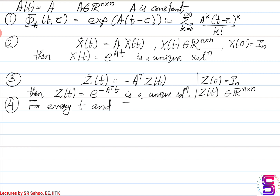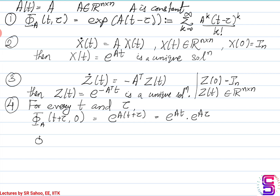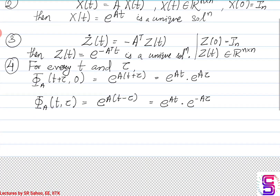For every t and τ, φ(A, t+τ) is nothing but e^(At) multiplied by e^(Aτ). Similarly, φ(A, t, τ) is e^(A(t−τ)), which can again be written as e^(At) multiplied by e^(−Aτ).